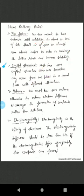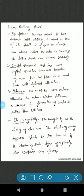Next is the crystal structure. The elements must have same crystal structure, otherwise transition may occur from one phase to a second phase with different structure. For example, both should have FCC or BCC. Next is valence - ions must have same valence, otherwise the valence electrons differ and creates the formation of compounds rather than solution.